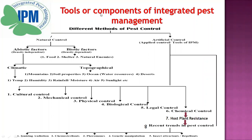Let us now see the different tools or components of Integrated Pest Management. The first is natural control — different biotic factors like natural enemies that influence and affect pest populations. The second is artificial control, where human interference develops new techniques and methods for pest control. Abiotic factors include climatic factors such as temperature, humidity, rainfall, sunlight, and air.